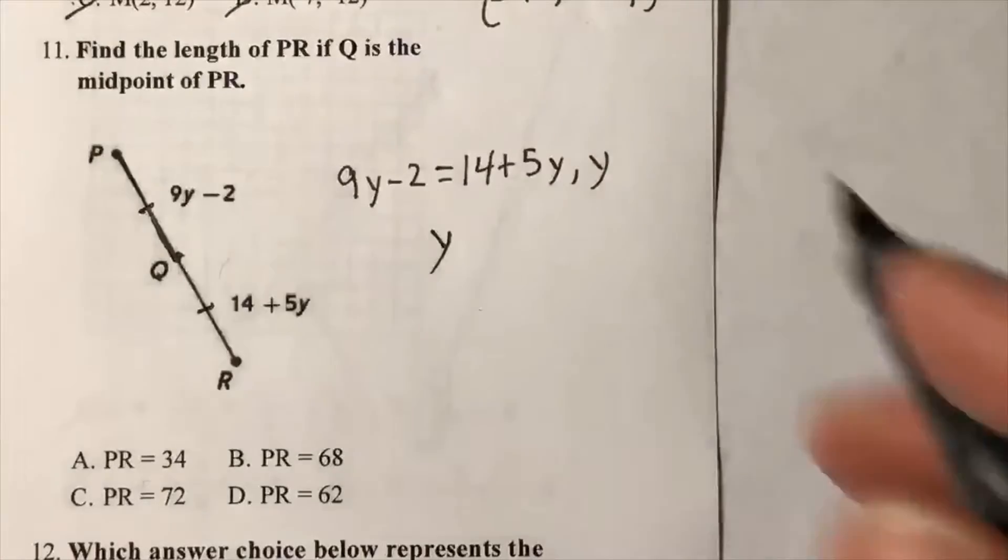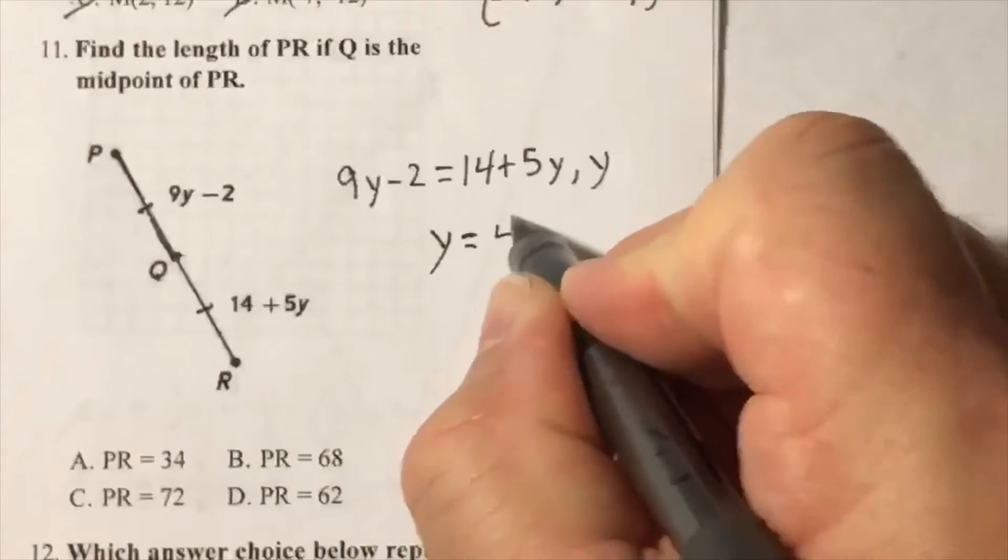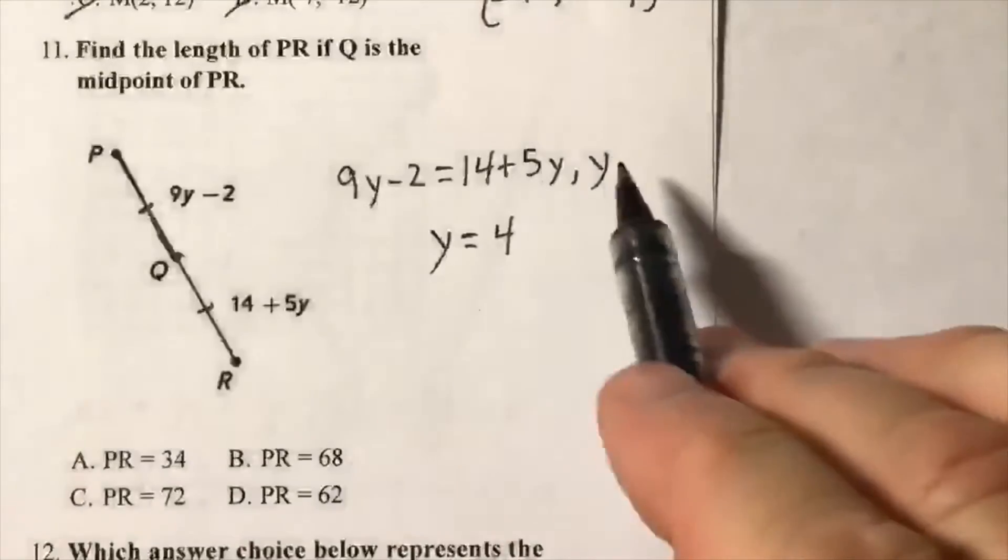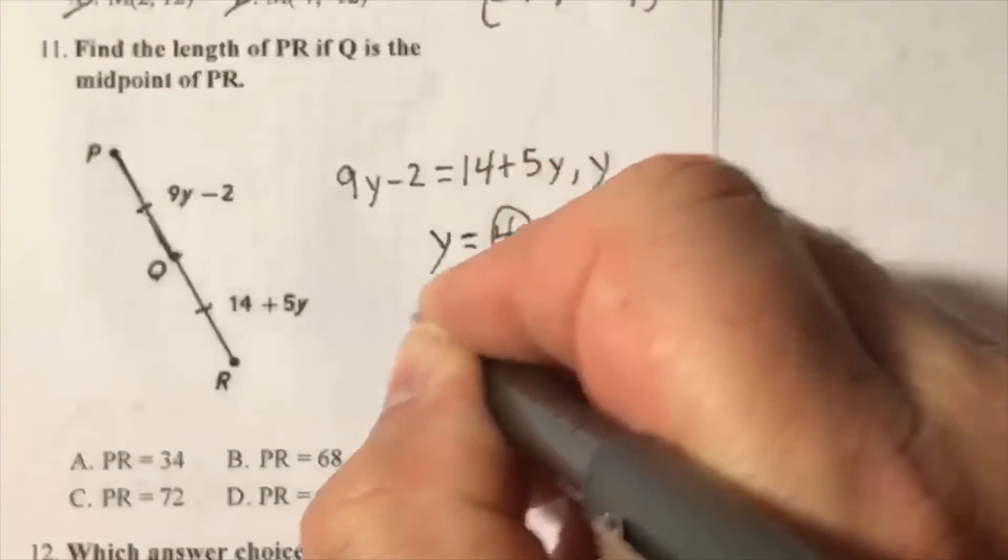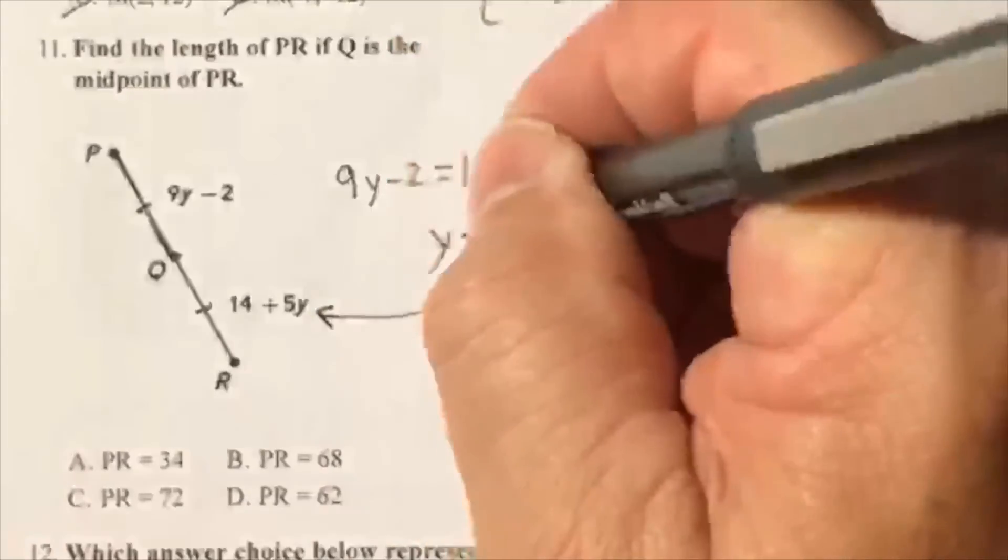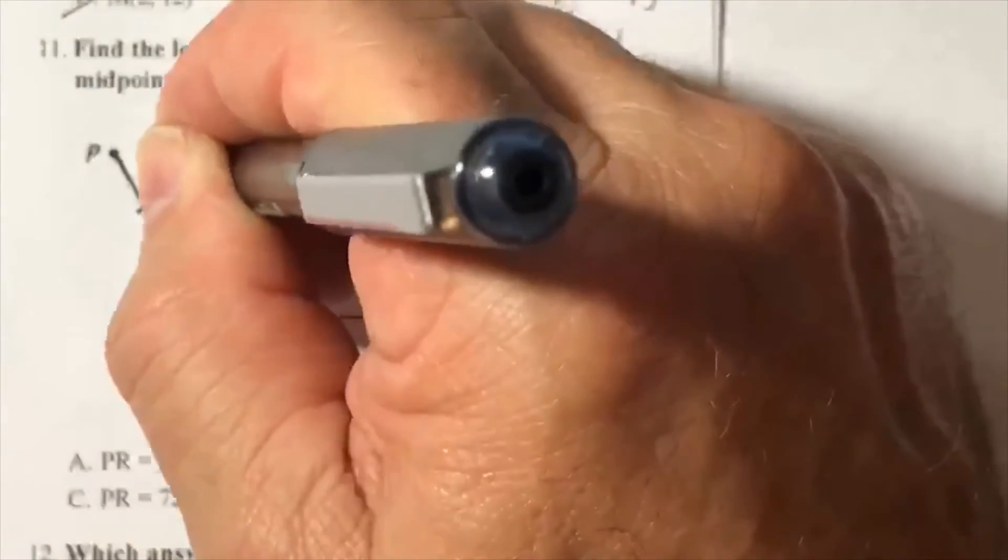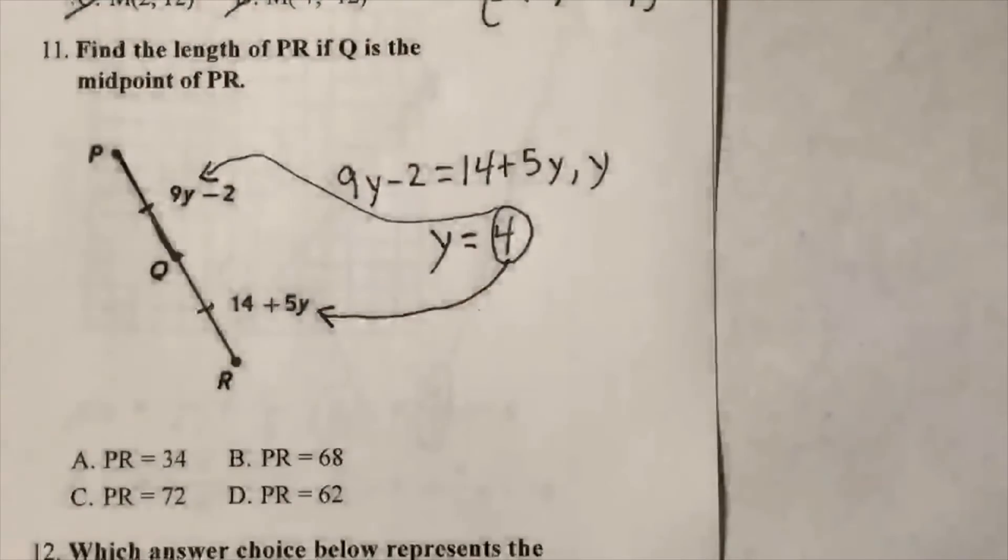So y is going to equal 4. All right, then this gets plugged in to wherever you have a y here and to here. So what this is producing